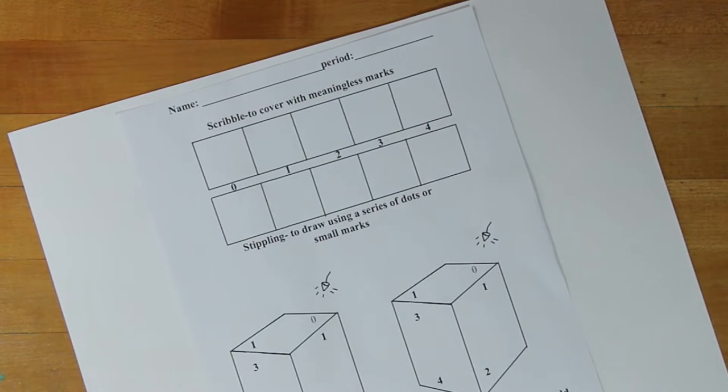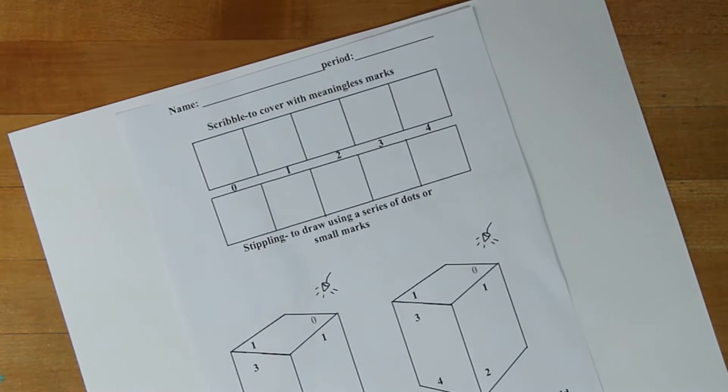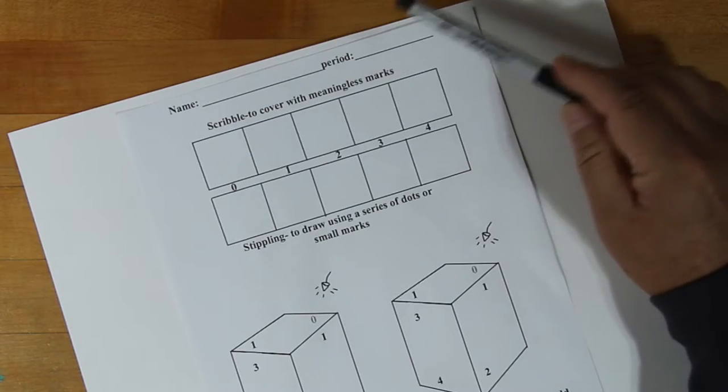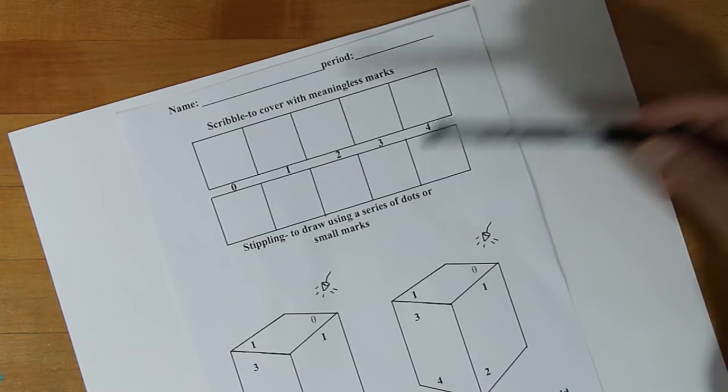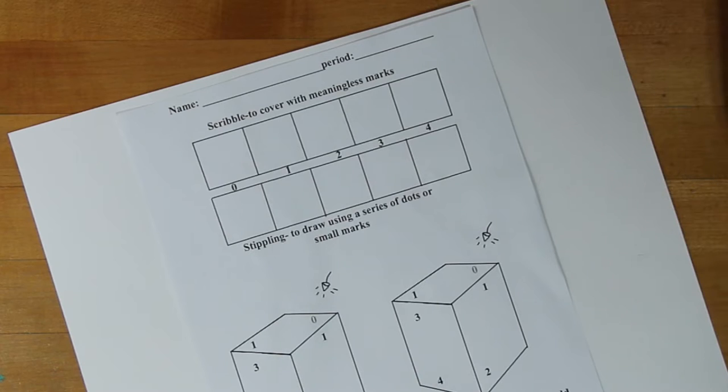All right, so today we're going to be looking at two more inking techniques. The first one is called scribbling, or scribble, and that just means to cover with meaningless marks. And the second one is stippling, and that's to draw using a series of dots or small marks.